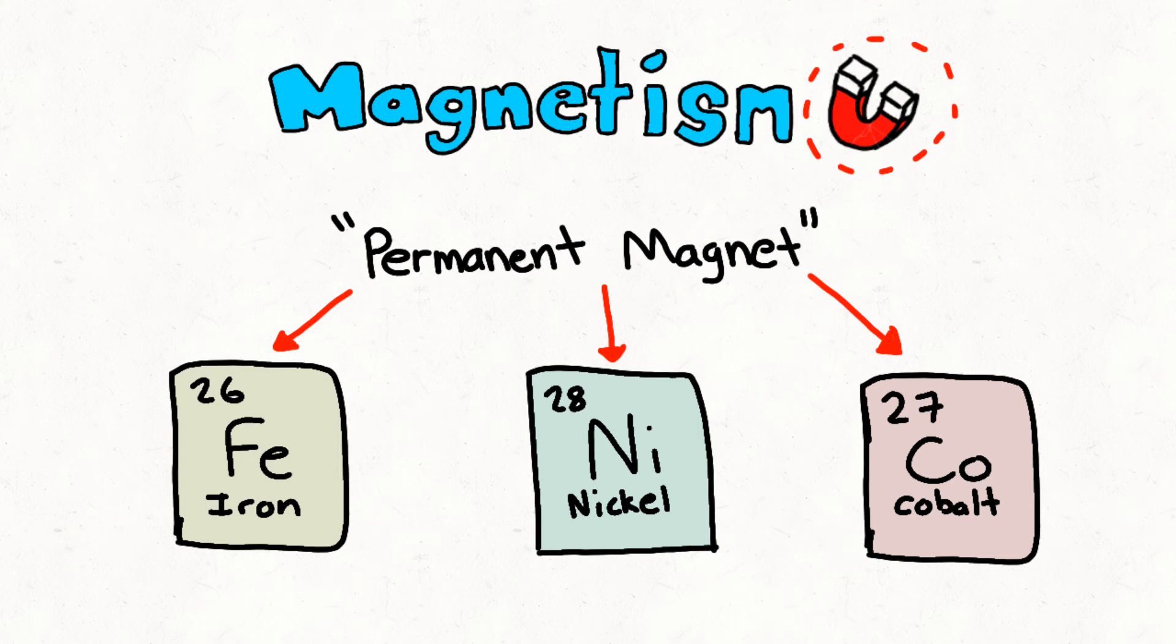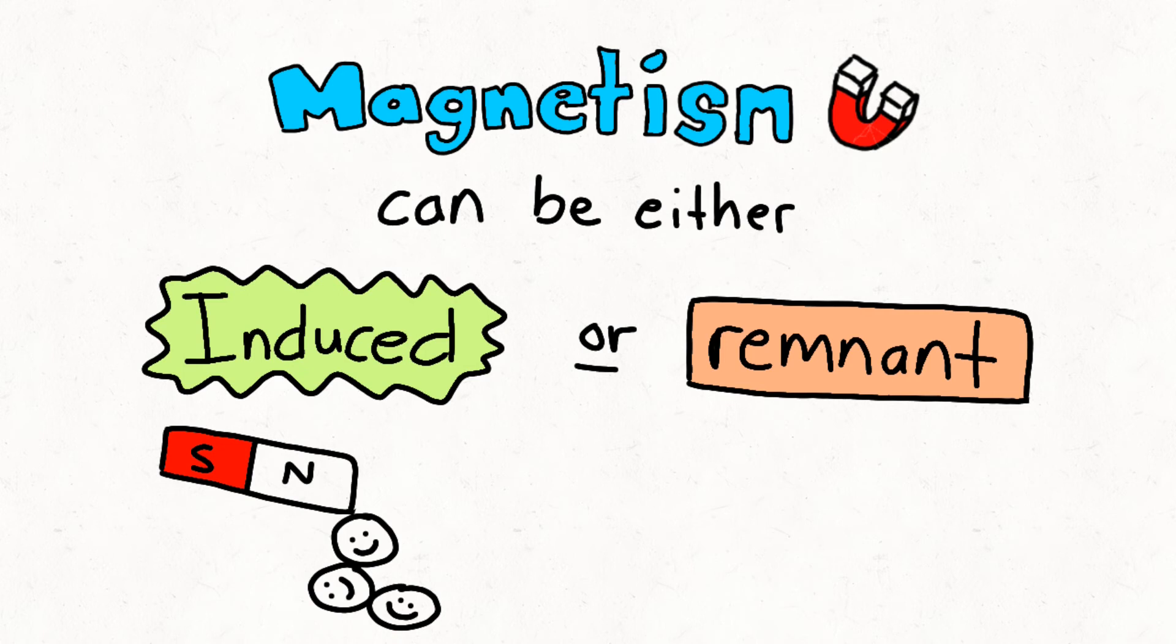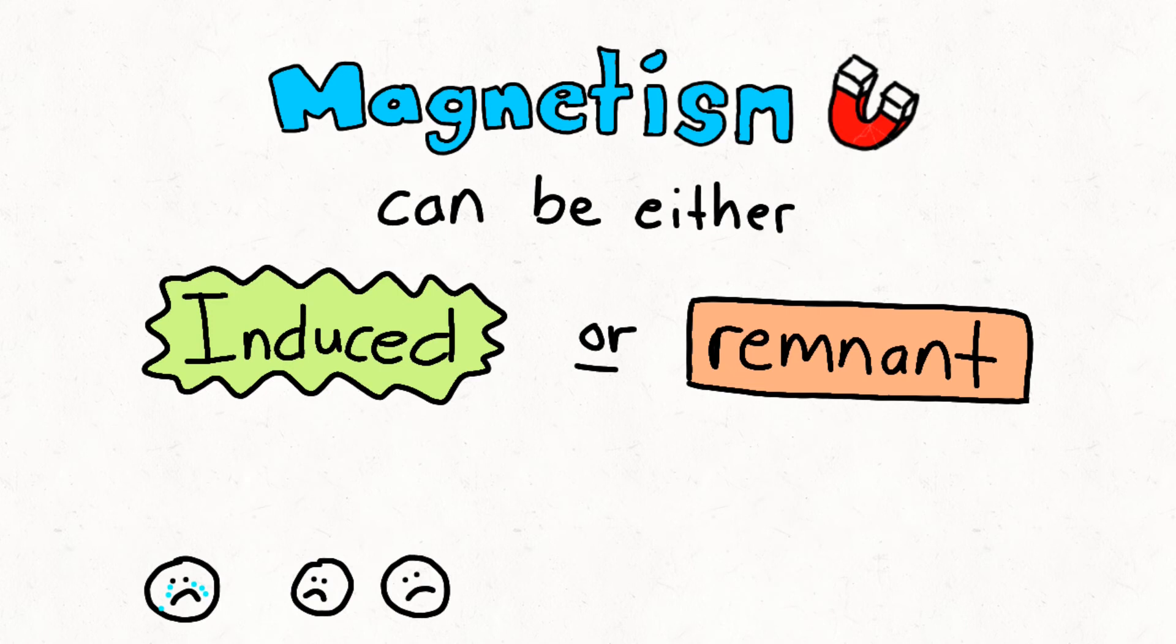Now, magnetism can either be induced or remnant. Some objects only become magnetic when they're placed near a magnetic field like a permanent magnet. These objects are known as induced magnets. Once the field is removed, the induced magnet loses its magnetization.